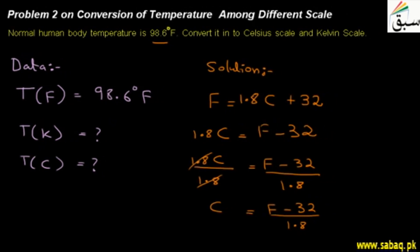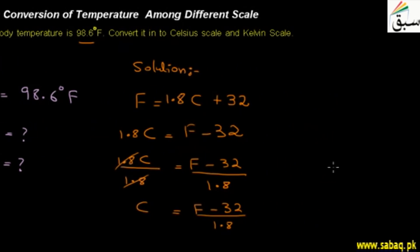So if I scroll here, see, C is equal to what value? F is given as 98.6 degrees Fahrenheit minus 32, whole divided by 1.8. So what's our answer? 98.6 minus 32 is 66.6, and divide it by 1.8, so the answer is 37 degrees Celsius.